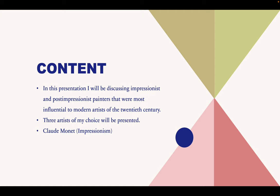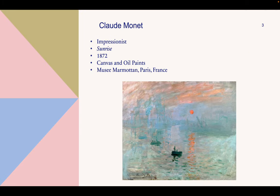Claude Monet is the first artist I will discuss. He was an Impressionist painter. In the art textbook, he is described as the most fervent follower of Impressionist techniques. His canvas, titled "Impression, Sunrise," was created in 1872 and gave the art movement Impressionism its name. It depicts the Port of Le Havre in France, where Monet grew up.